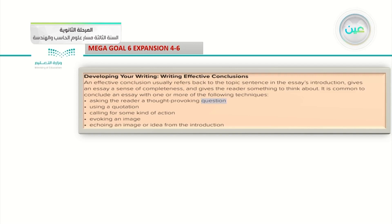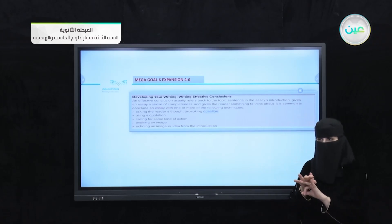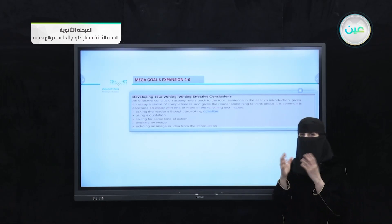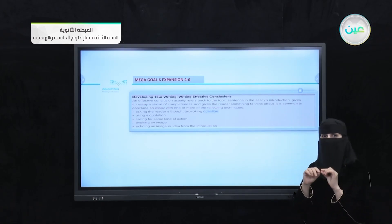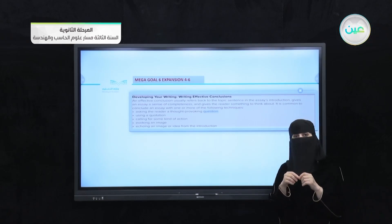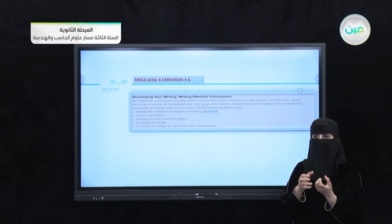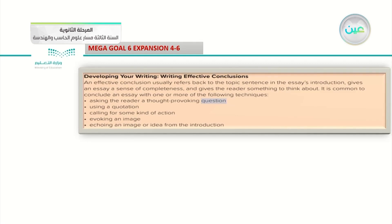Writing an effective conclusion. As I said in a previous lesson, our essay should have three parts. The first one is the introduction. The second part is the body, which in academic writing generally has three paragraphs. And the last, and an important one, is the conclusion. Today, InshaAllah, we're going to discuss how we make it effective and how we keep the reader excited about what we want to say at the end of the essay.